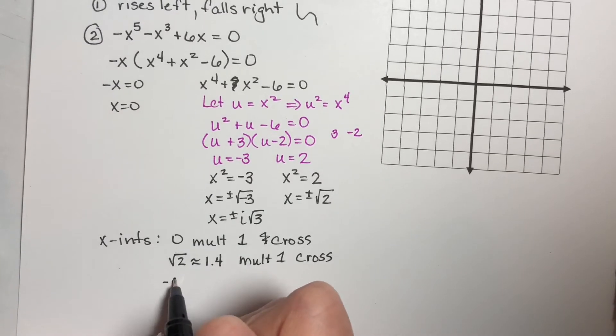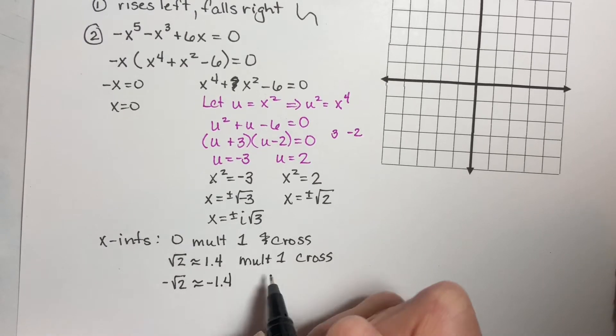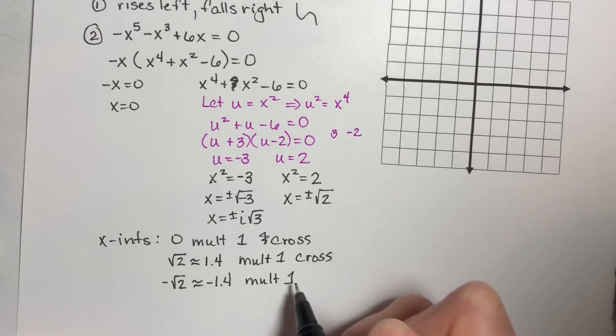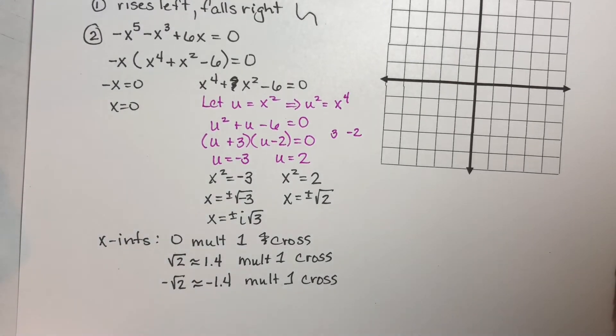And then I got negative square root of two, which is approximately negative 1.4. And I got that answer one time, and I also cross right there.